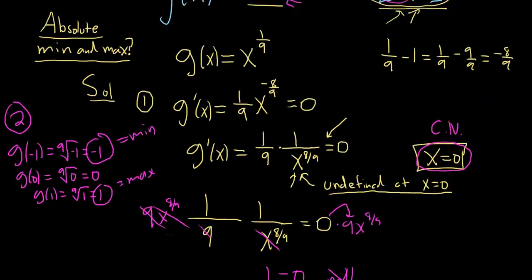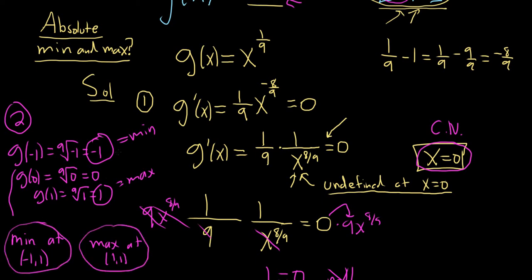Most of the time, if you're using an online homework system, it'll want the ordered pair. So the min is at negative 1, negative 1, and the max is at 1, 1. It's important to keep in mind that the actual minimum value is negative 1, so that is a perfectly acceptable answer on a test because it's the smallest y value. Mins and maxes are y values — they're not ordered pairs. The max here is 1, which would also be perfectly acceptable, except most online homework systems want the ordered pairs.